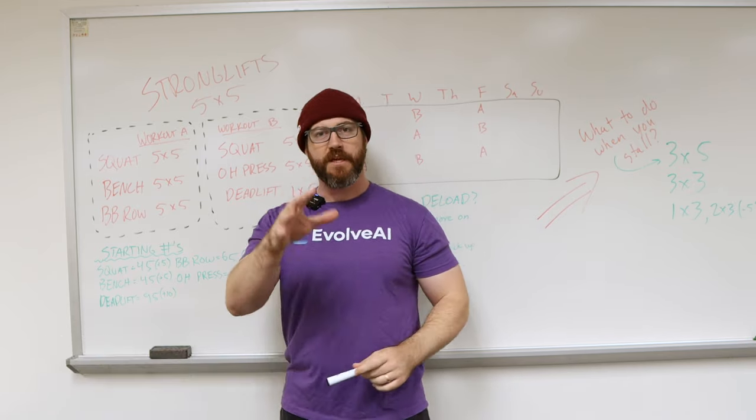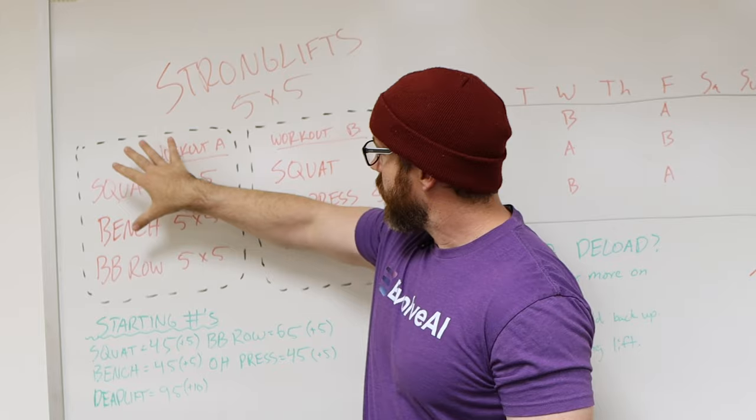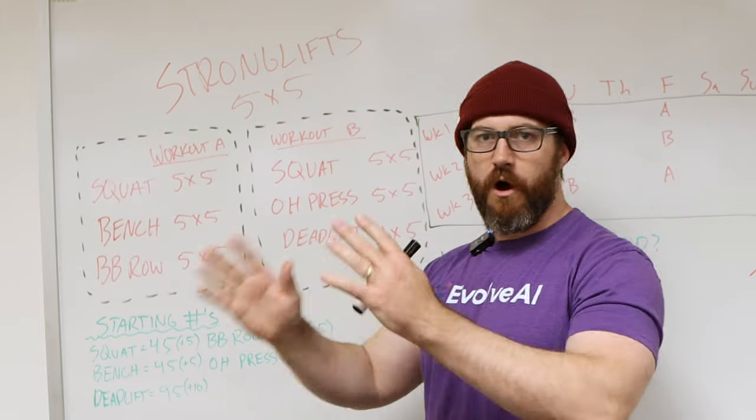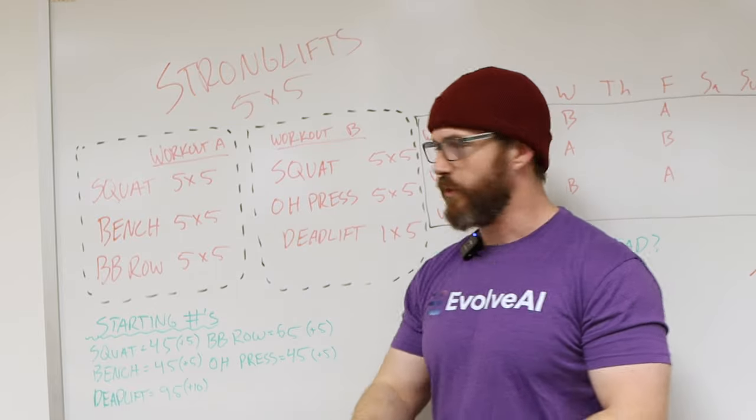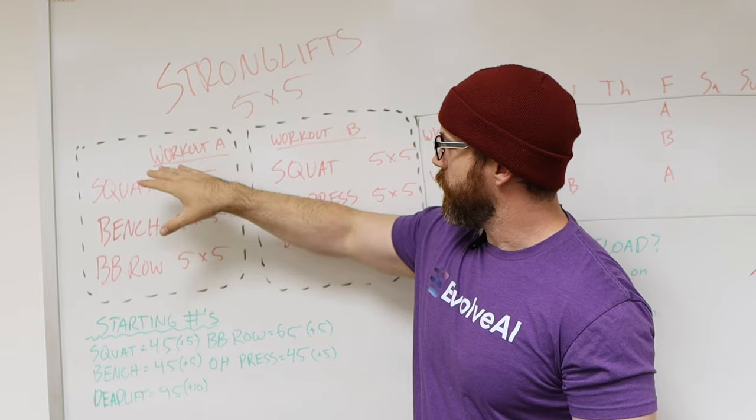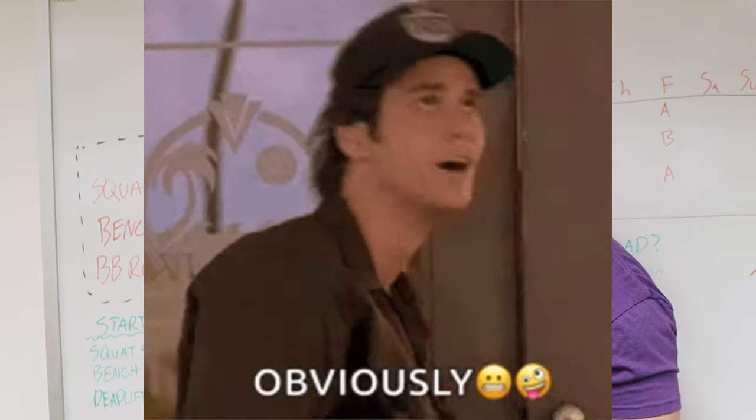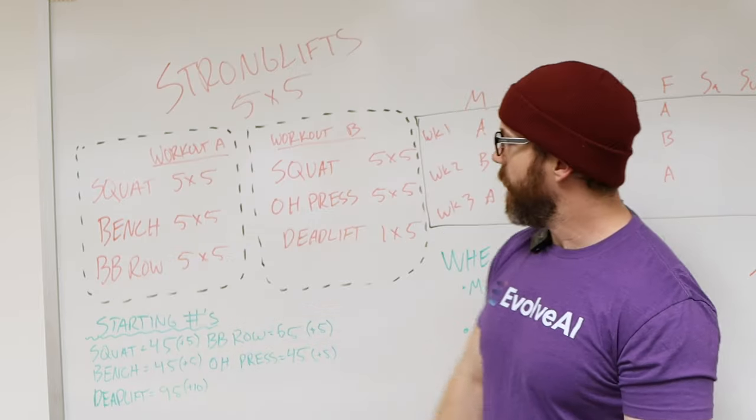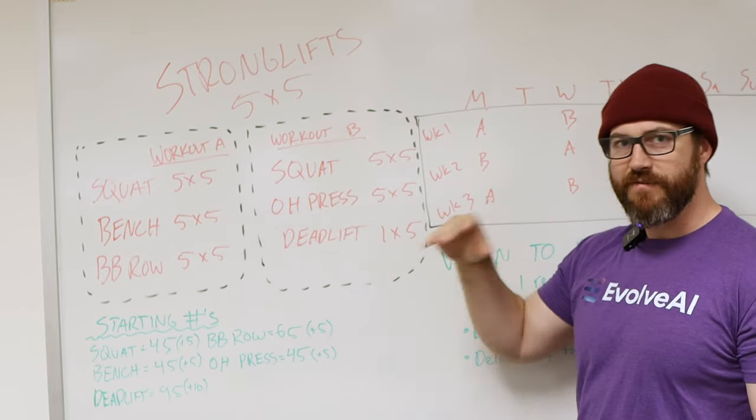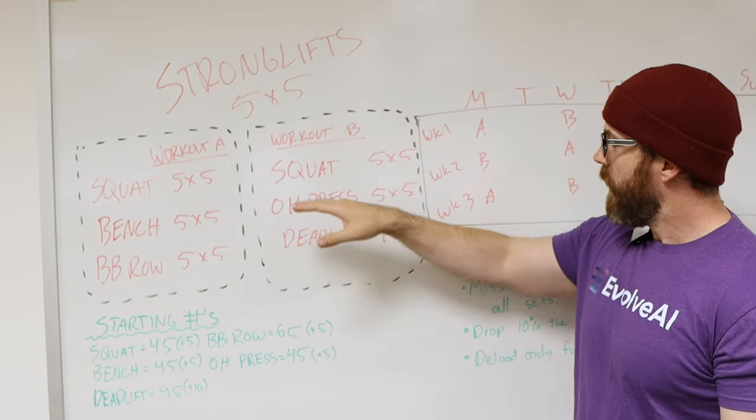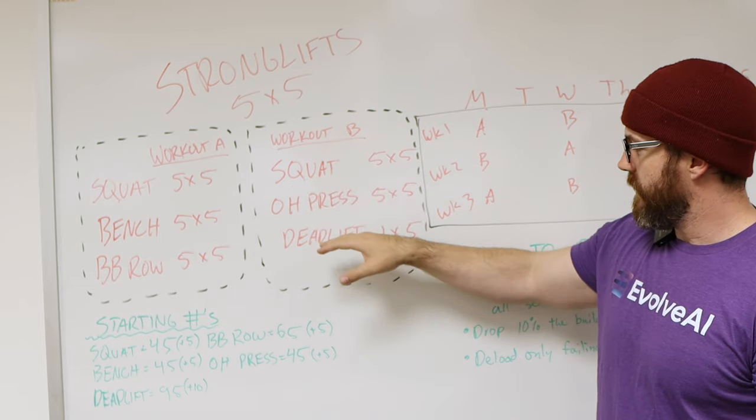So first off, let me explain what StrongLifts 5x5 is. It's a workout A, workout B that you just do on and off. As you can see here, you're just going to oscillate between them as you go through your weeks. On workout A, you're doing squat 5x5, as the name implies. Same with bench, same with barbell rows. On workout B, you are still doing squat, so you're progressing that lift every single time you're going into the gym, but you've also got overhead press and deadlift.